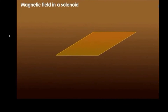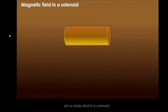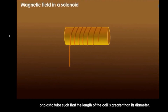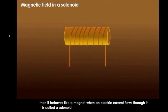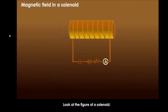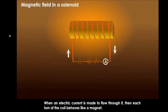Magnetic field in a solenoid. Let us study what is a solenoid. An insulated copper coil is wound around some cylindrical cardboard or plastic tube such that the length of the coil is greater than its diameter. Then it behaves like a magnet when electric current flows through it, and this is called a solenoid. When an electric current is made to flow through it, each turn of the coil behaves like a magnet.